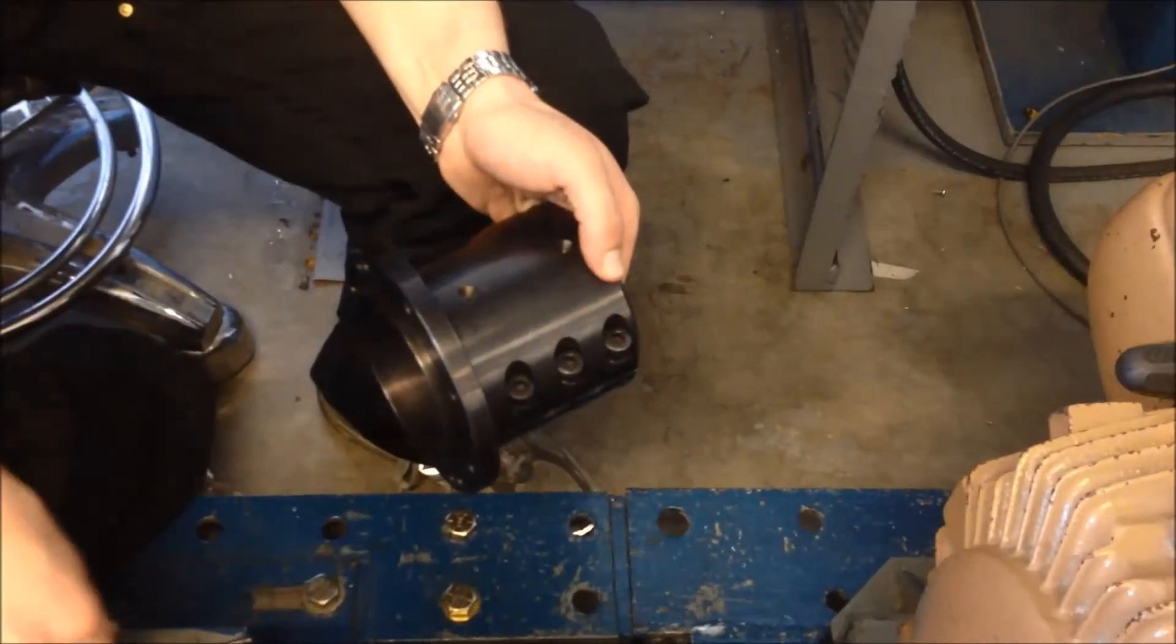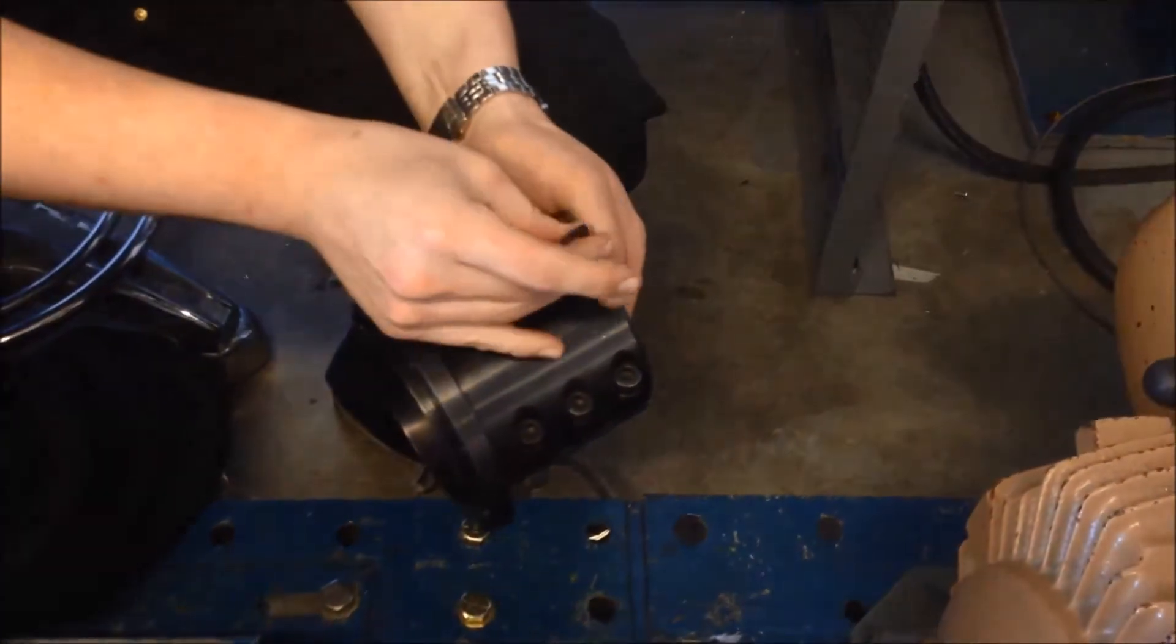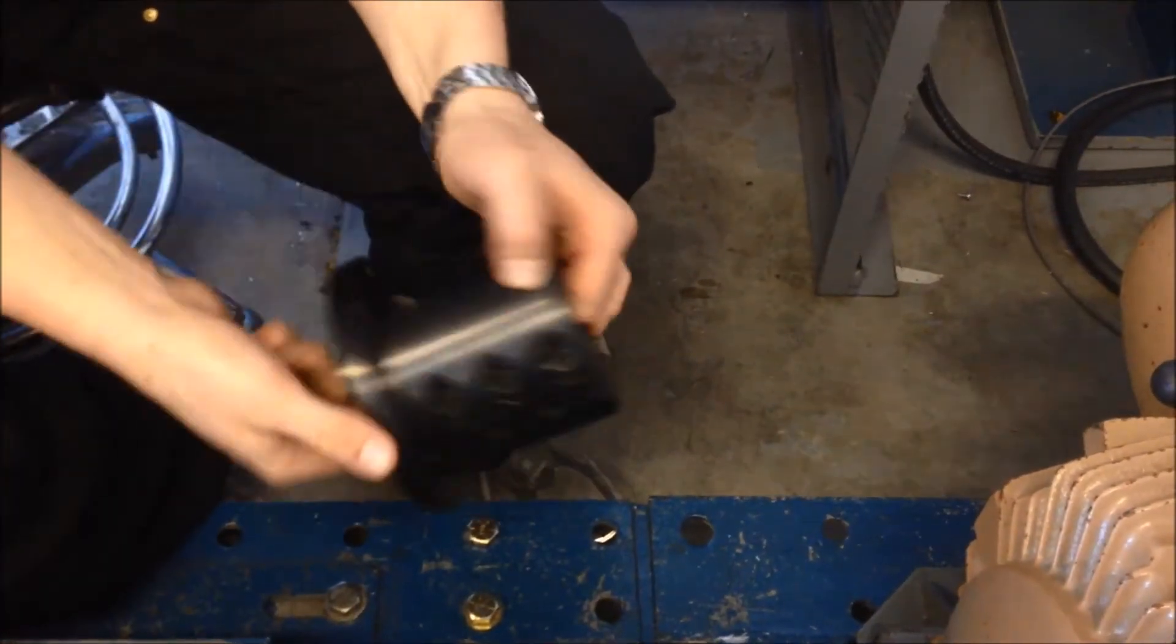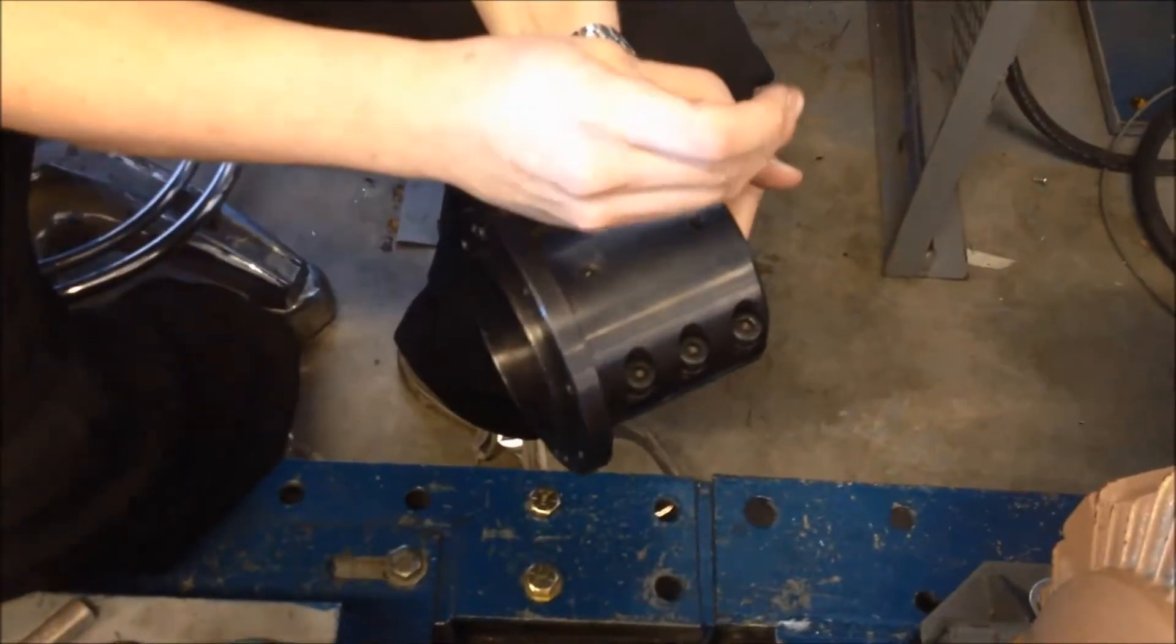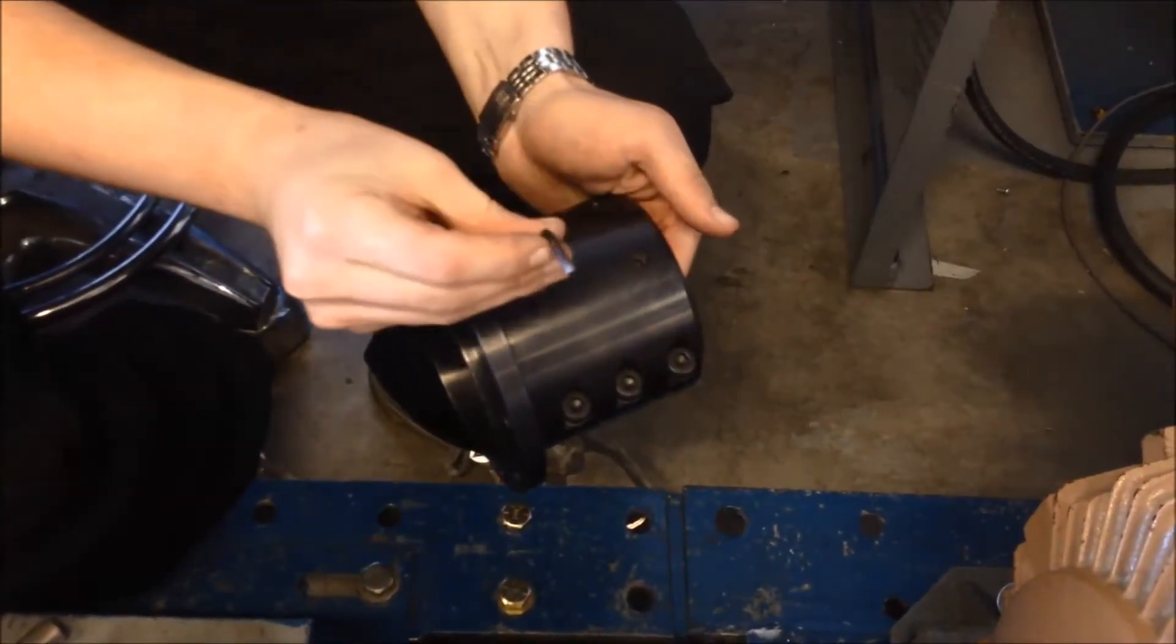Use an Allen wrench to loosen all six clamp bolts. Also loosen the four Allen set screws located at the top and bottom of each hub.